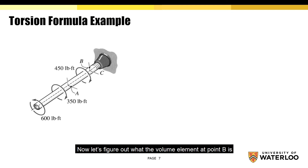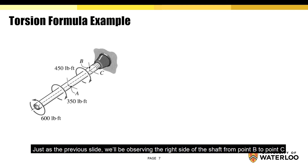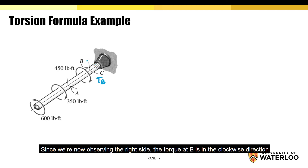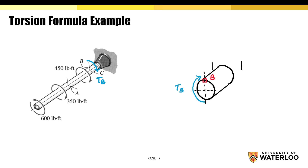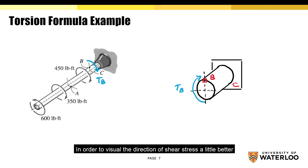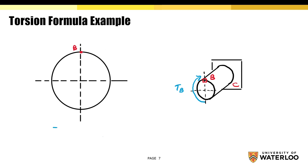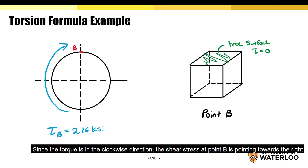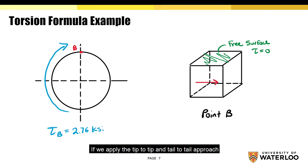Now let's figure out the volume element at point B. Observing the right side of the shaft from point B to point C — while calculating TB, we assumed the torque was applied in the counterclockwise direction, but since we're now observing the right side, the torque at B is in the clockwise direction. Notice how the shear stress is positive, so you won't have to modify anything. Since the torque is clockwise, the shear stress at point B is pointing to the right. Applying the tip-to-tip and tail-to-tail approach, we can determine the volume element at point B.